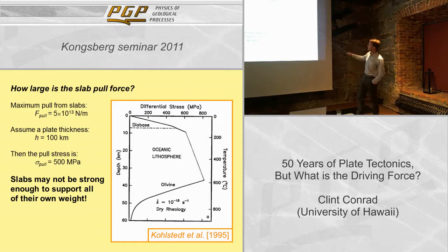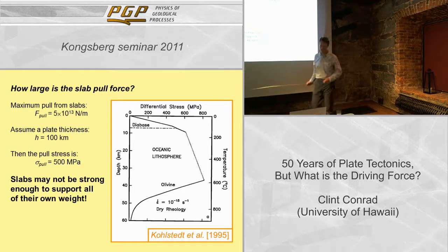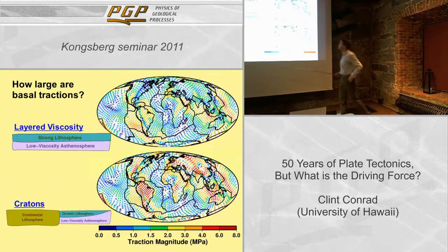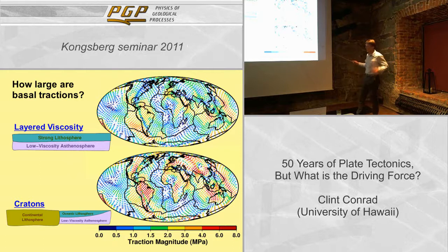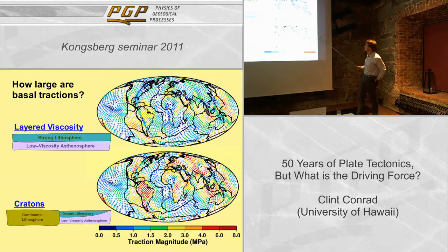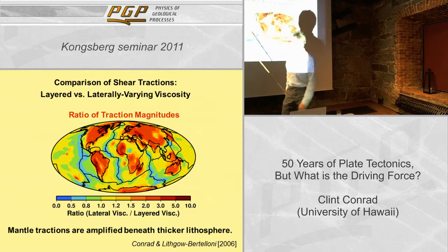Some people might argue that governs how much pull stress there could be, but remember there's seismicity and other processes that can weaken the plate, especially in the subduction zone. So perhaps only some fraction of that can be supported. Looking at the basal tractions — the colors represent the magnitude of the traction. But if you add deep stiff cratons to the base of plates where we see them, like in South America and Asia, and they protrude down deeper, the traction magnitude increases because those plates are now more coupled to the mantle flow.